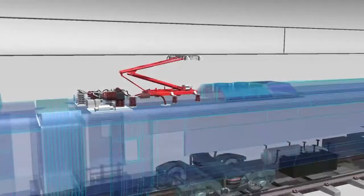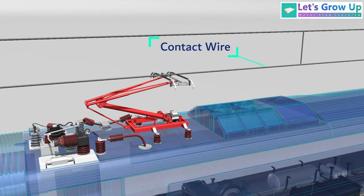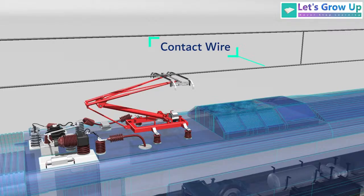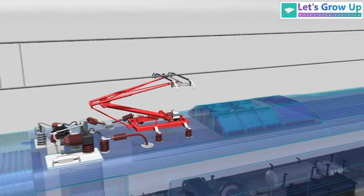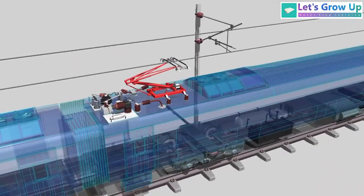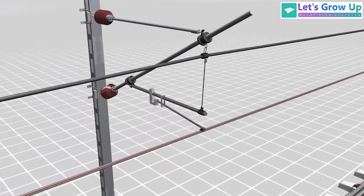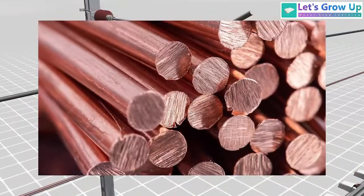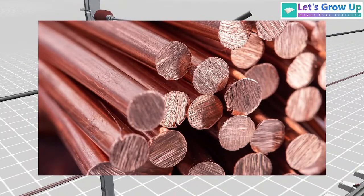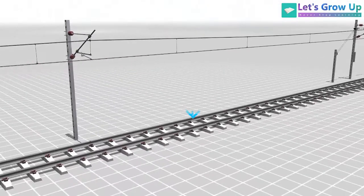The wire that connects with the pantograph on top of the train is called the contact wire. This wire plays a crucial role in the catenary system, as it directly supplies electricity to power the train's motors and systems. The contact wire is typically made of a highly conductive material, such as copper or aluminum, to efficiently transmit electrical current. It is suspended at a precise height above the rail tracks.